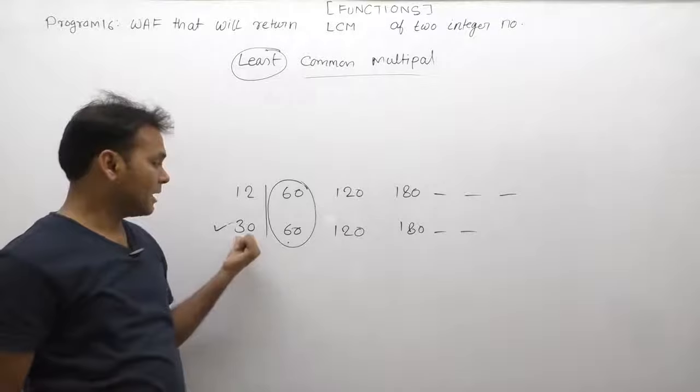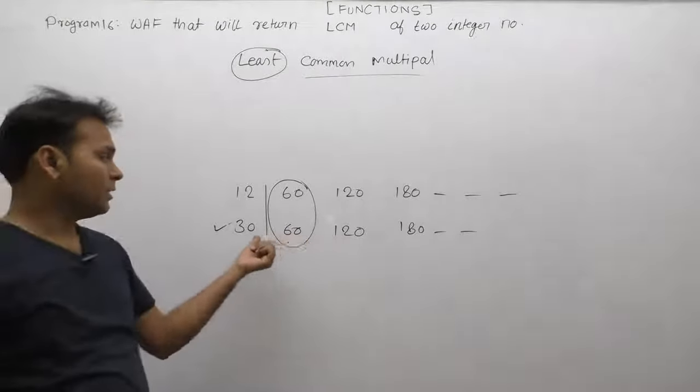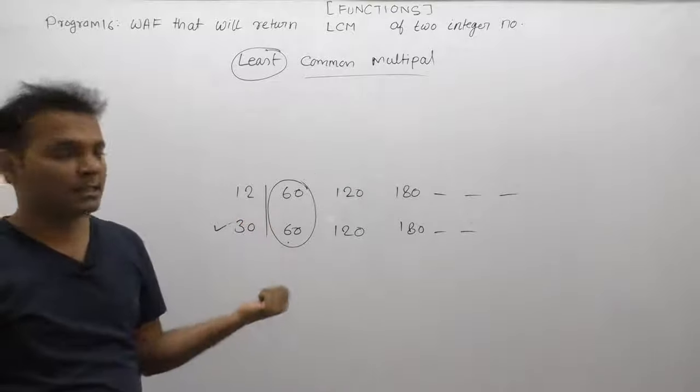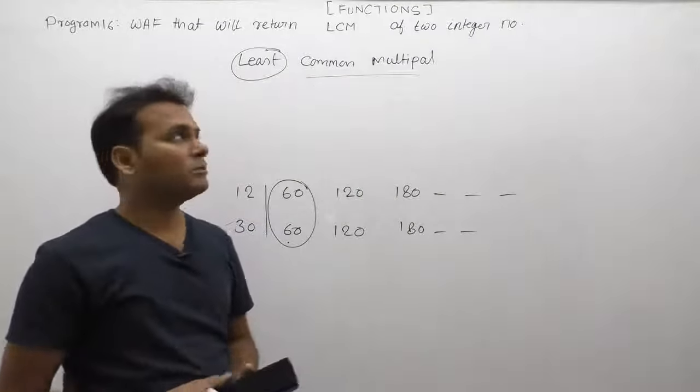We can verify: 60 is greater than 30 and greater than 12. Now let's describe the logic using a loop.